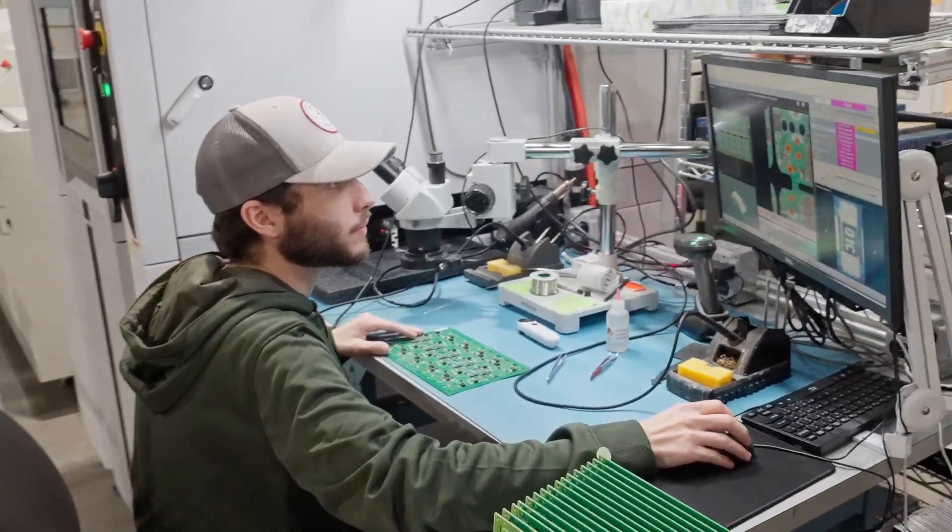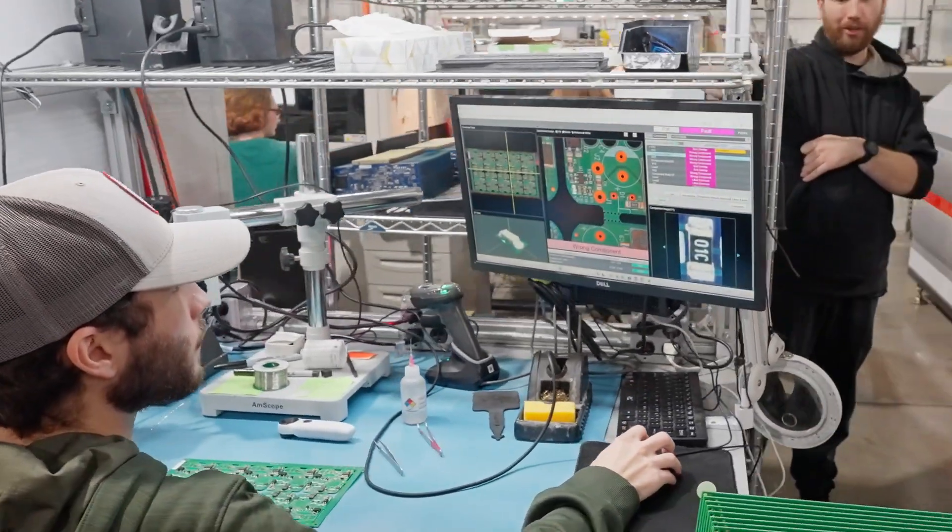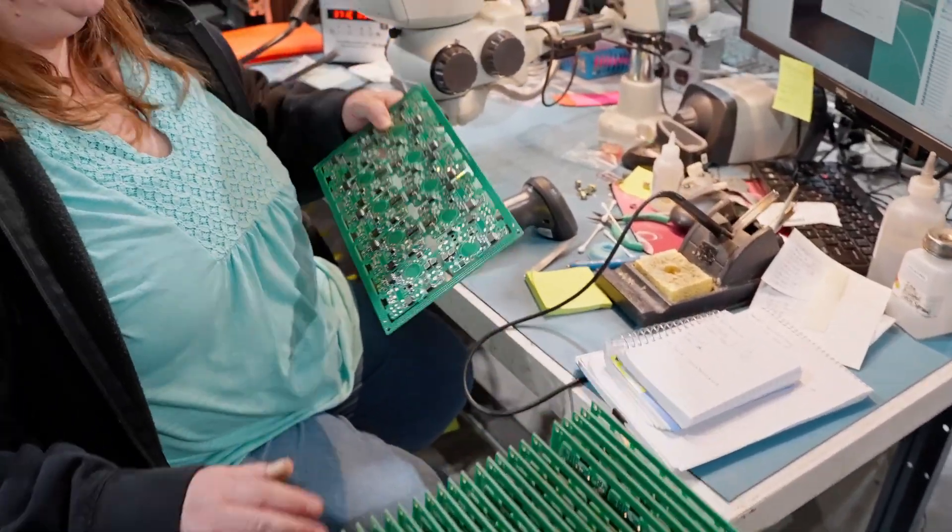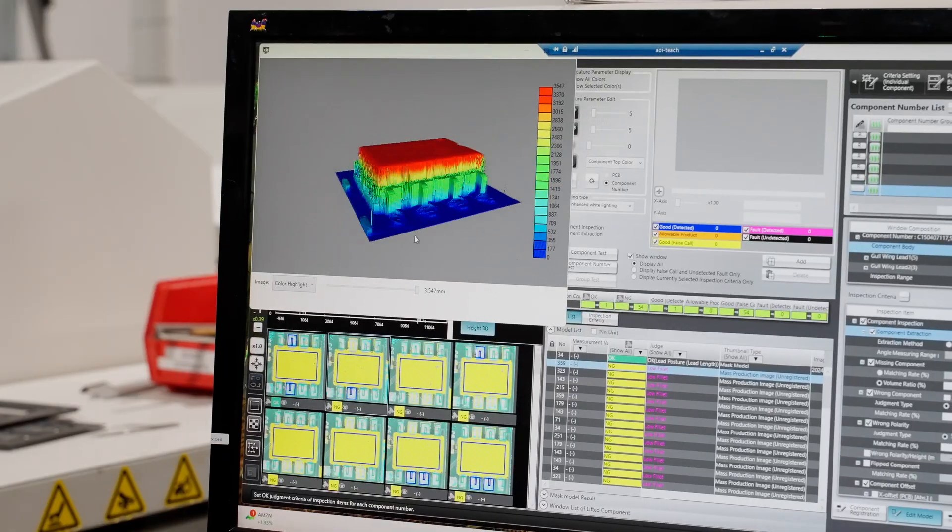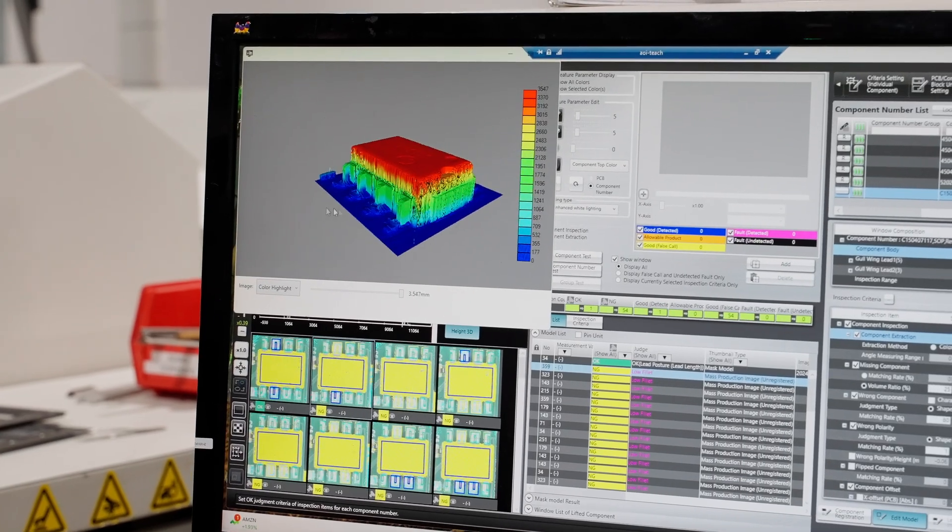Traceability is important for quality control and supply chain transparency. If there's a problem with a circuit board, electronics manufacturers need to find out what went wrong, including what automated optical inspection might have missed.